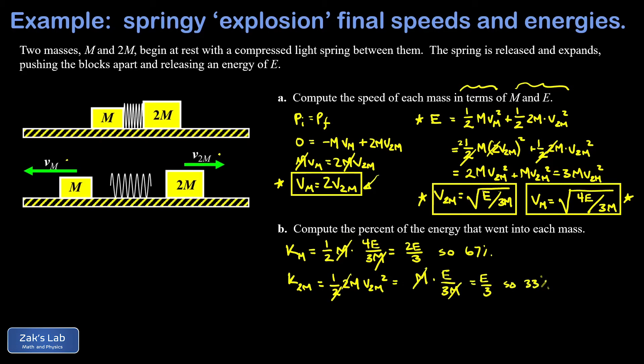Again as you get more experience with these explosion problems you should expect that the smaller piece always runs away with the majority of the energy. In this case making one of the pieces half the mass of the other caused it to run away with two-thirds of the energy while the larger mass ran away with only one-third of the energy.